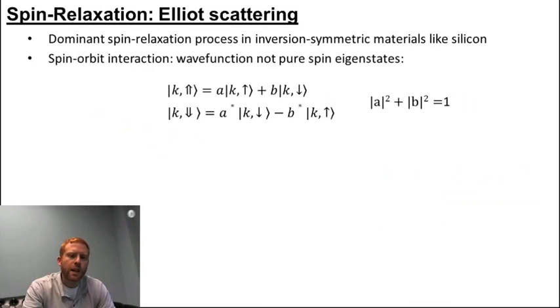This electron-phonon spin relaxation process results from the fact that due to the weak but non-zero spin orbit coupling, the electron wave functions are not pure spin eigenstates up and down. Rather, spin up has a small amount of spin down and vice versa, but remain fully orthogonal.